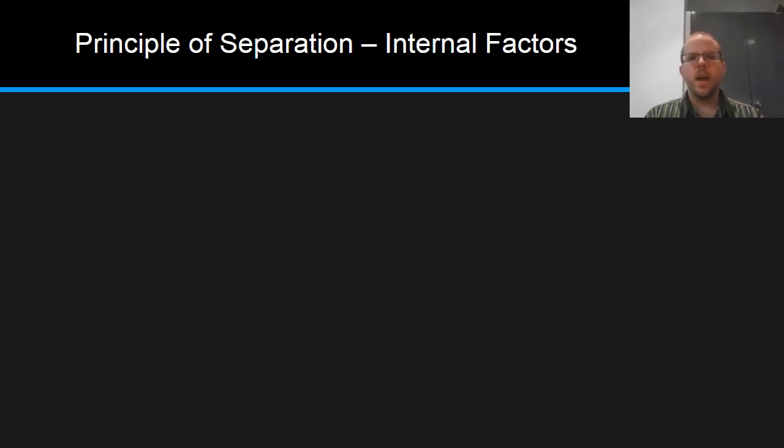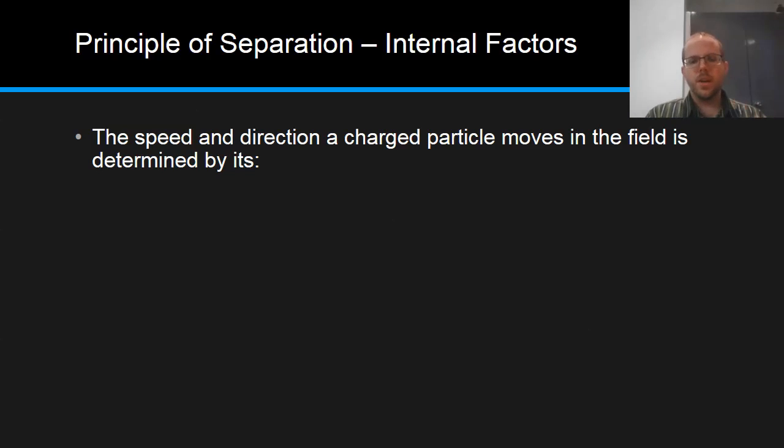Now overall we can look at the different factors that will affect how things separate with electrophoresis. We can divide them into two main areas. We can do that internal and external factors. So internal factors have to do with the actual particles themselves, the size of the fragment, some of their specific properties. In a moment we'll look at external factors which have to do with the environment. The speed and direction that a charged particle will move in the field will be determined by firstly its net charge. Is it positive, neutral, or negative? And if it does have a positive or negative charge, how many positives or negatives does it have? Is it plus one, plus two, plus three, minus one, minus two, minus three? Because that's also going to impact how quickly it moves.